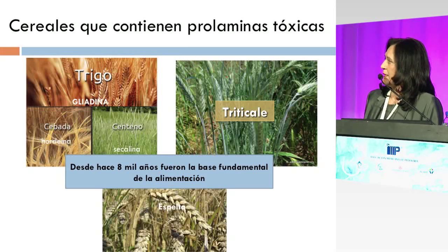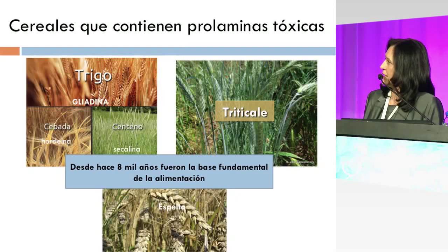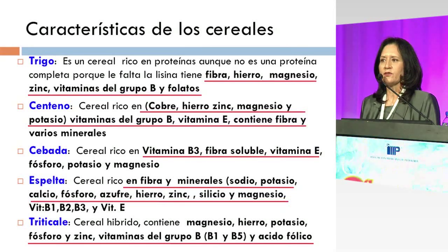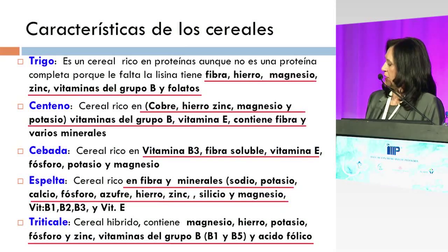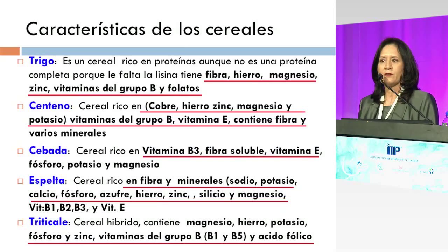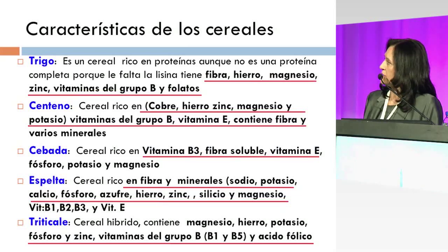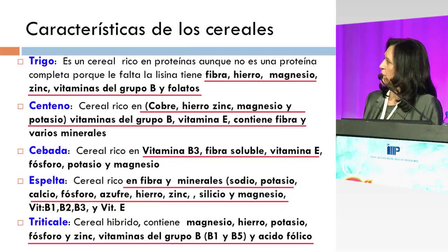Ya comentábamos que desde hace ocho mil años todos estos elementos son la base fundamental de la alimentación. Aquí solamente les quiero mostrar qué características tienen estos cereales y por qué se van a relacionar en algunos individuos con la restricción de la dieta libre de gluten y que pueden estar deficientes en algunos. El trigo es una proteína incompleta porque le falta la alicina, pero es rico en fibra, en hierro, magnesio, en vitaminas del grupo B, en folatos y en zinc; y el resto de estos cereales también comparten estas características de riqueza en cuanto a minerales y vitaminas del complejo B, incluyendo la vitamina E para la cebada también.